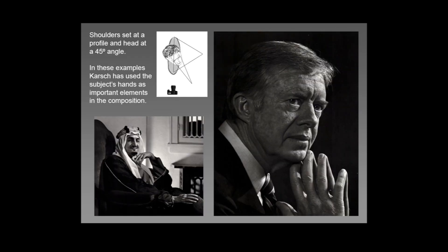The shoulders set at a profile and head at a 45-degree angle is also quite good. In these examples, Karsh has used the subjects' hands as important elements in the composition. The leader of Saudi Arabia is on the lower left — it really softens his mood and pose by having him not look directly at the camera. Also, the shot of Jimmy Carter, where he's looking off-angle slightly from the camera — very typical. Karsh always did shots of U.S. presidents using this pose. He's using fairly harsh light with Rembrandt lighting, so you see that upside-down triangle underneath the eye on the shadow side of the face. Very effective.